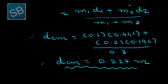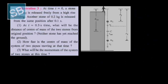Do not forget to write down the unit, otherwise your 1 mark is gone. So, this is the distance of the center of mass of the system between the two stones. This is the end of the first task of Illustration number 3. Now we will move further for the second task: how fast is the center of mass of the system of two stones moving at that time?